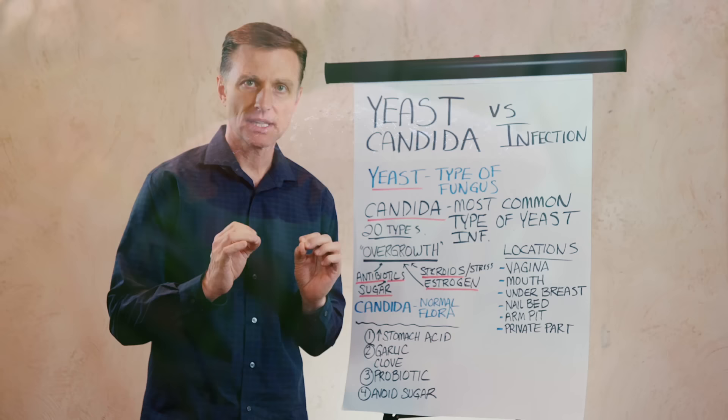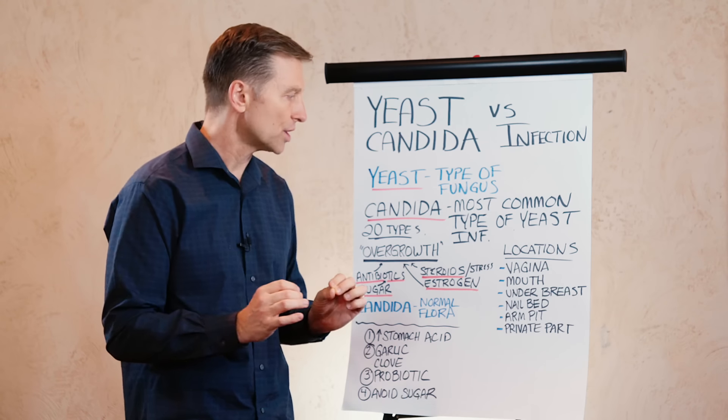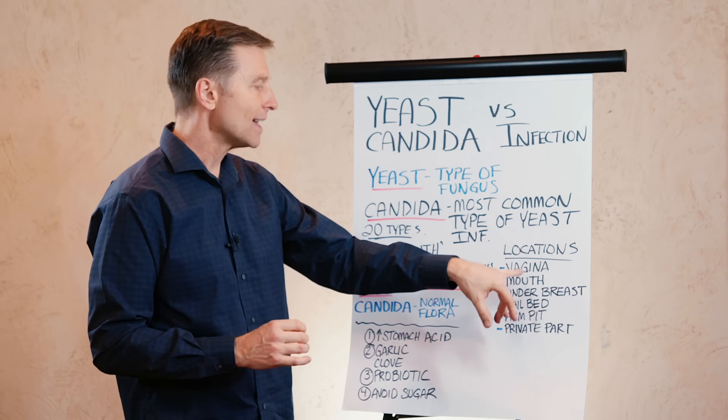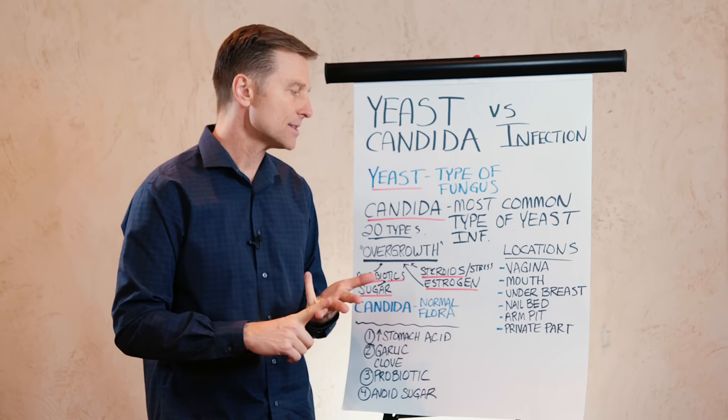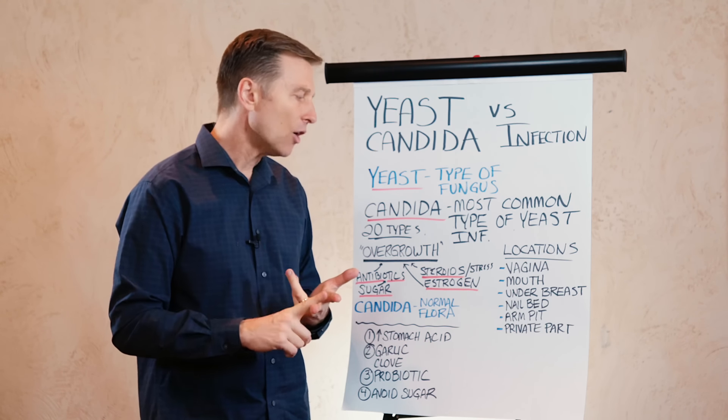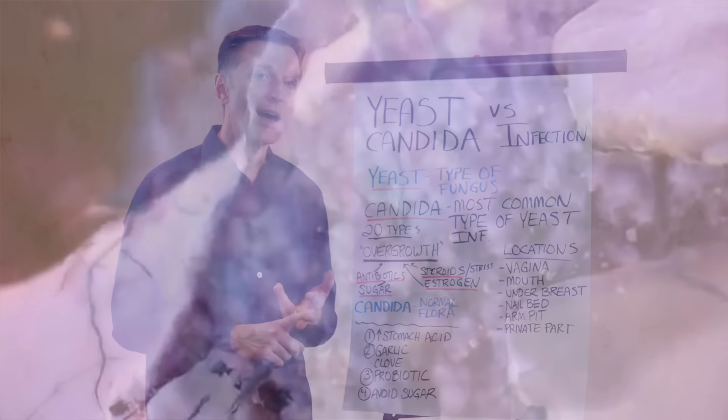The location of this candida overgrowth can occur in the vaginal area, the mouth, under the breast, nail bed, armpits, and private parts. It likes areas that are moist.